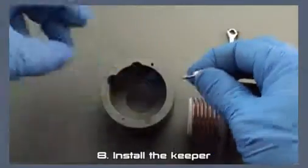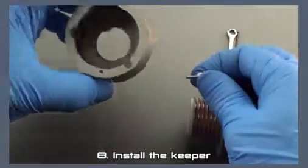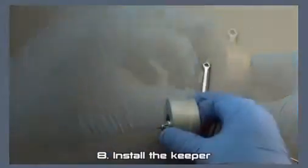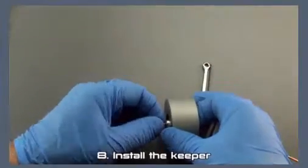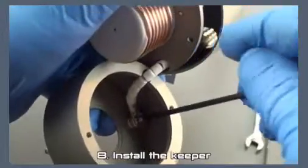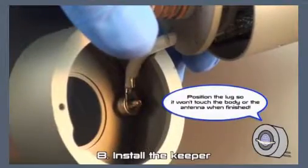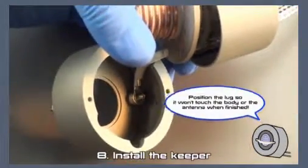Bend the lead so that it fits into the deepest cutaway on the front body flange. Secure the keeper lead to the front body using screws, insulators and cups. Position the lug so it won't touch the body or the antenna when finished.